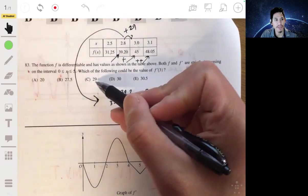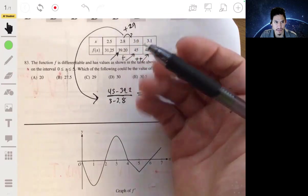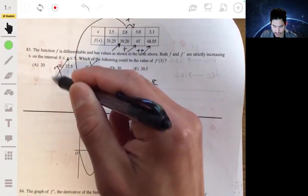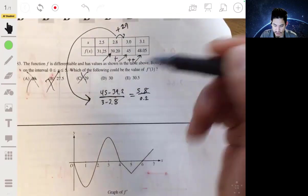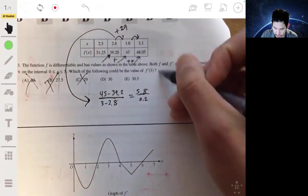So it can't be 29 because it has to be more than 29 as X gets larger. It can't be 29, so is it 30 or 35? Let's see what it is from 3 to 3.1.